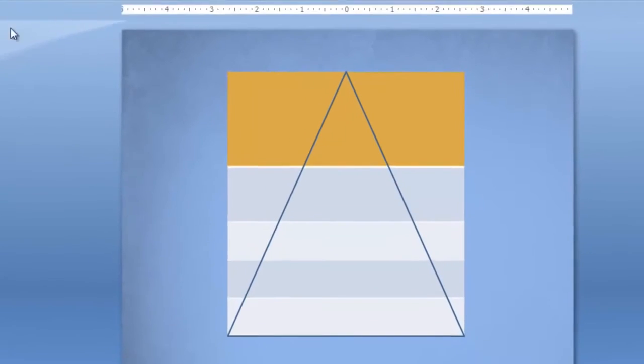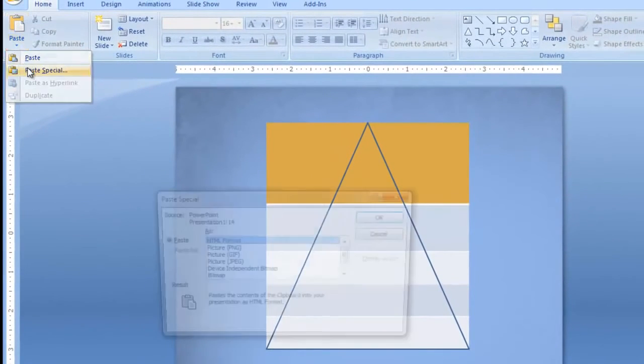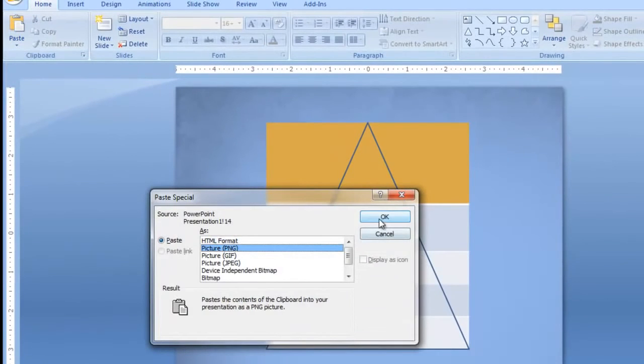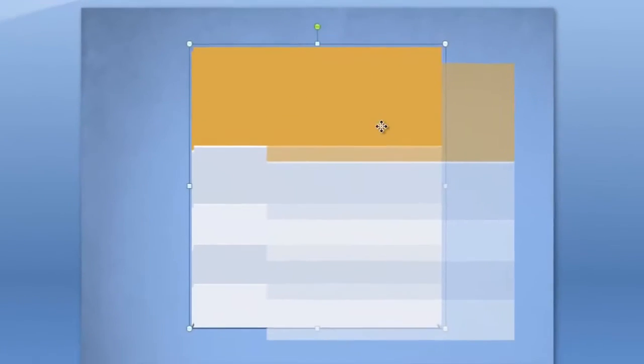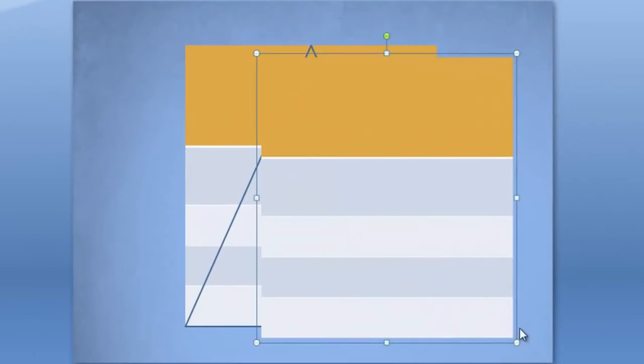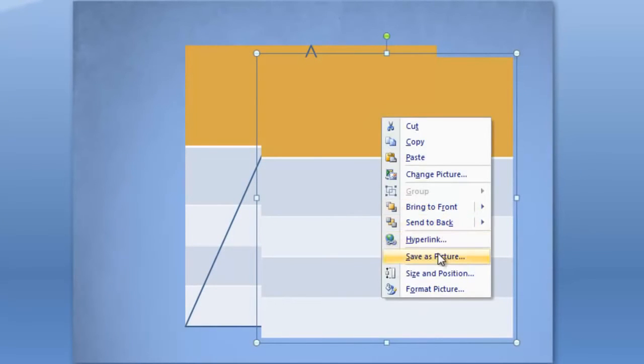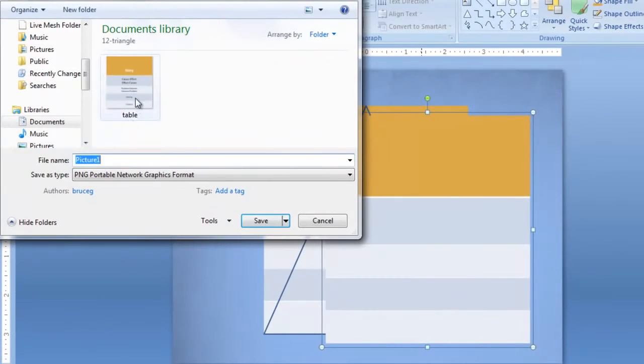Once again, you copy the table. Paste Special. Save it as a PNG file. And this time I'm not going to crop the outside. I just want to show you what happens when you don't crop the outside. Right click on it. Save as Picture. And I'm going to call this Table 2. Save.